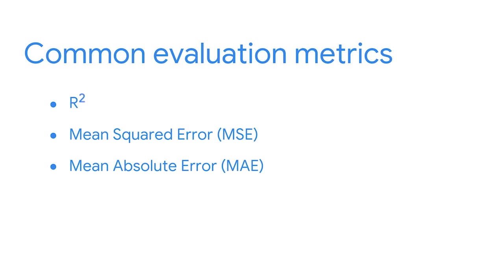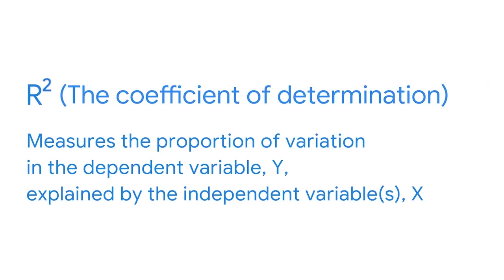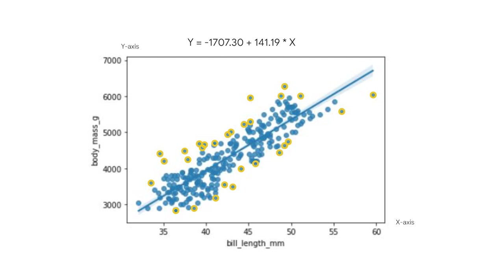Three metrics you might encounter are R-squared, mean-squared error (also called MSE), and mean-absolute error (or MAE). The main metric that academics, researchers, and data professionals use when evaluating regression models is called the coefficient of determination, or R-squared. R-squared measures the proportion of variation in the dependent variable Y explained by the independent variables X. In the penguin example, you identified a linear relationship between bill length in millimeters and body mass in grams. Based on your regression analysis, you found the best fit line: body mass in grams equals negative 1,707.30 plus 141.19 times bill length. R-squared helps data professionals determine how much of the variation in X explains the variation in Y.